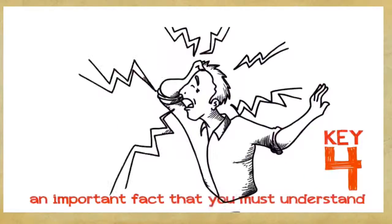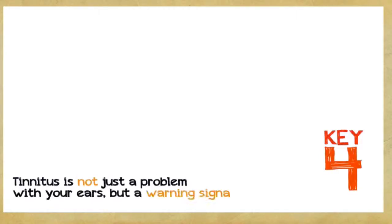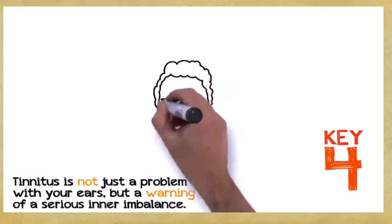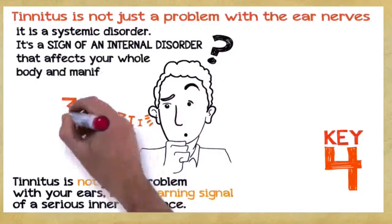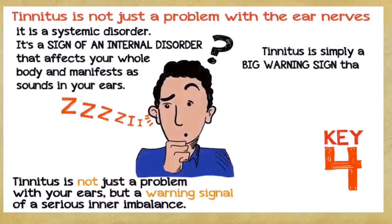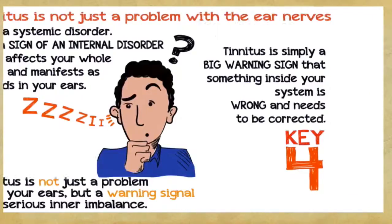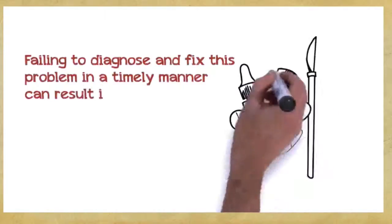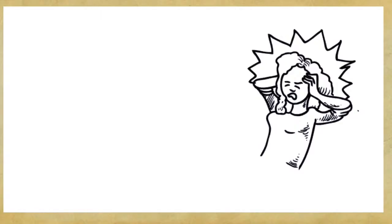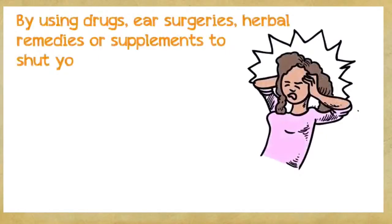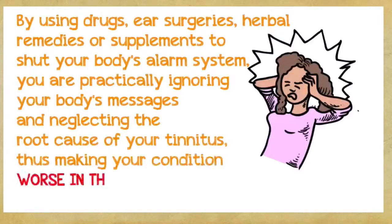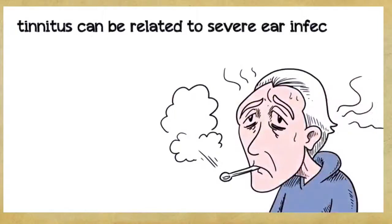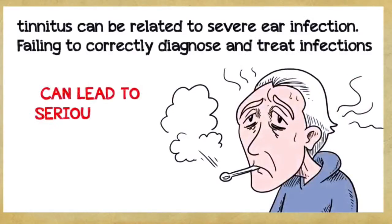Key number four: This is a very important fact that you absolutely must understand if you want to save hundreds or even thousands of dollars. Tinnitus is not just a problem with your ears, but a warning signal of a serious inner imbalance. In the vast majority of cases, tinnitus is not just a problem with the ear nerves, it's a systemic disorder. It's a sign of an internal disorder that affects your whole body and manifests as sounds in your ears. Tinnitus is simply a big warning sign that something inside your system is wrong and needs to be corrected. Failing to diagnose and fix this problem in a timely manner can result in a far more severe and chronic disorder, which can seriously endanger your health. By using drugs, ear surgeries, herbal remedies, or supplements to shut your body's alarm system, you're practically ignoring your body's messages and neglecting the root cause of your tinnitus, thus making your condition worse in the long run. For example, tinnitus can be related to severe ear infection. Failing to correctly diagnose and treat infections can often lead to serious long-term health consequences.